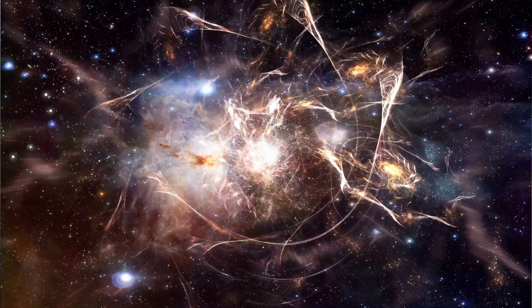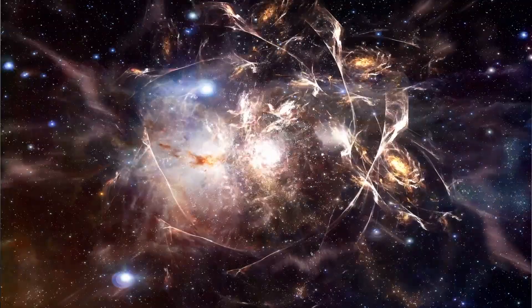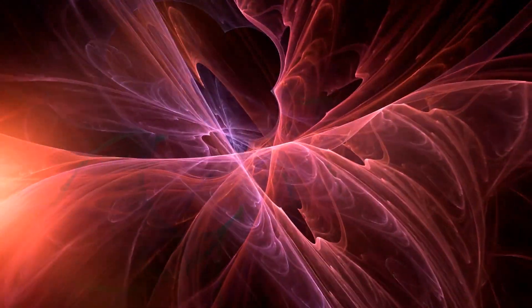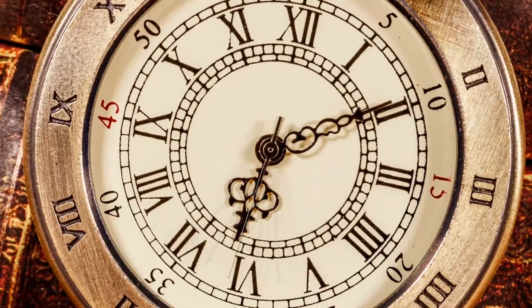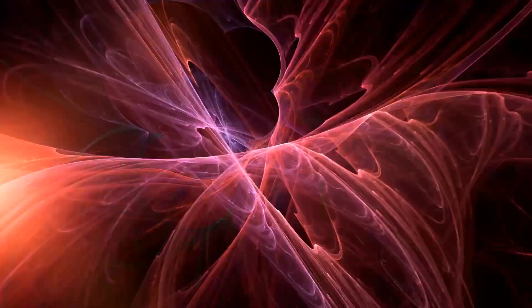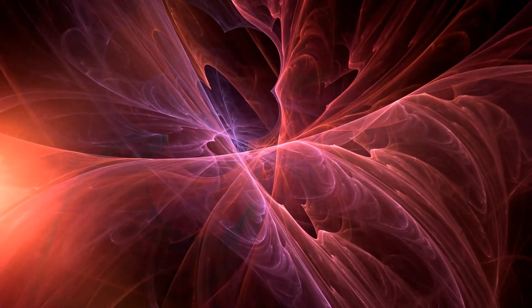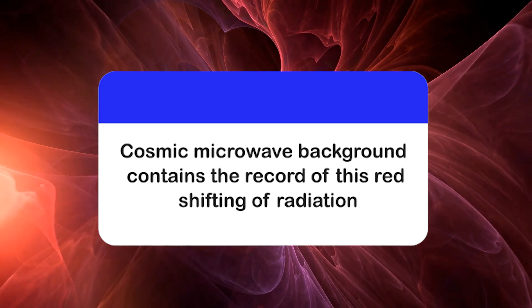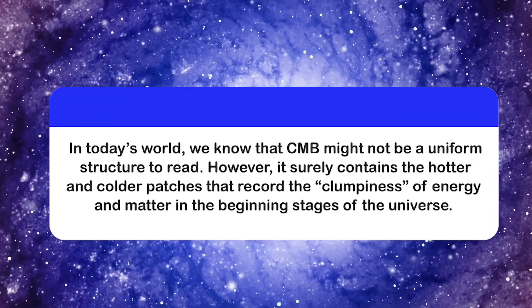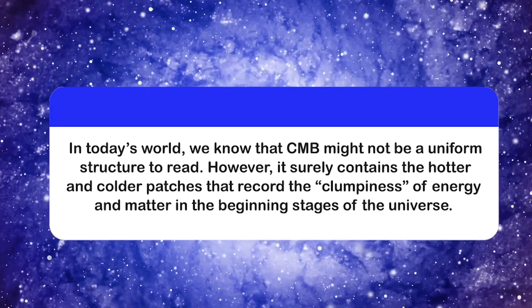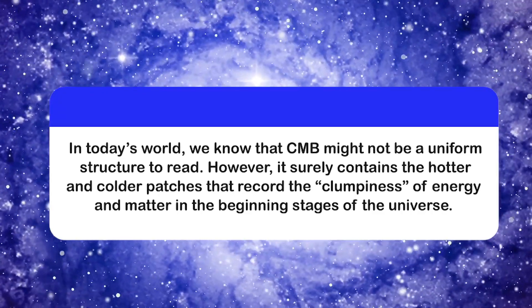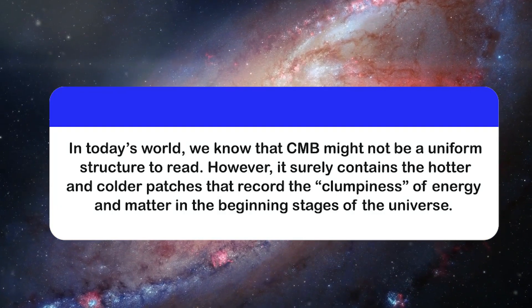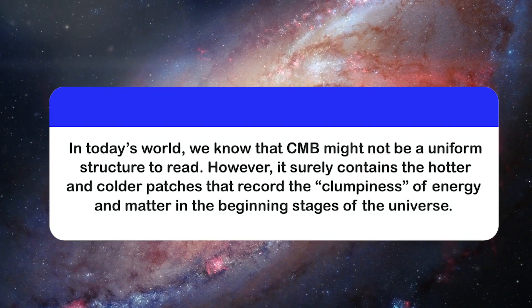When the big bang happened, after some time, an enormous amount of superheating of all the matter in the universe released large volumes of rays in the form of photons. As more time passed and the universe expanded further, these radiations got more and more red-shifted. Cosmic microwave background contains the record of this red-shifting of radiation. In today's world, we know that CMB might not be a uniform structure to read. However, it surely contains the hotter and colder patches that record the clumpiness of energy and matter in the beginning stages of the universe.